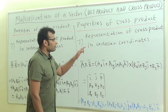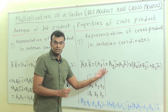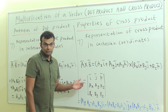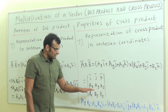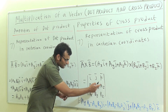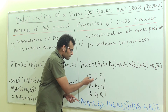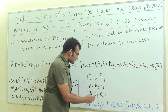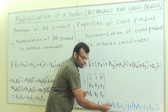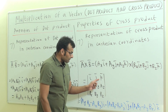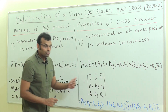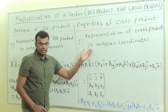For cross product in Cartesian coordinates, A bar cross B bar is written using the determinant method with a 3x3 matrix of I J K in the first row, AX AY AZ in the second row, and BX BY BZ in the third row. Expanding: the I component is AY BZ minus AZ BY, the J component is minus (AX BZ minus AZ BX), and the K component is AX BY minus AY BX. These are the properties of dot product and cross product.